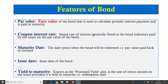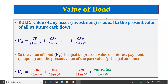Yield to maturity, also known as the promised yield, is the IRR — the internal rate of return — on the bond, provided the investor keeps the investment until its maturity. For bond valuation, we follow the rule in finance that states the value of any asset or investment is equal to the present value of all its future cash flows.